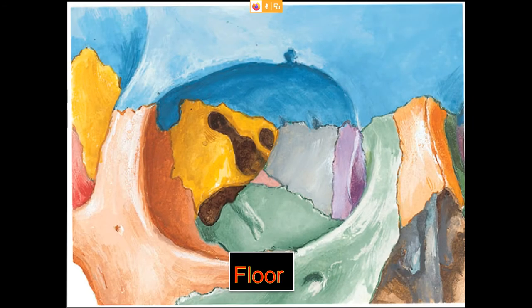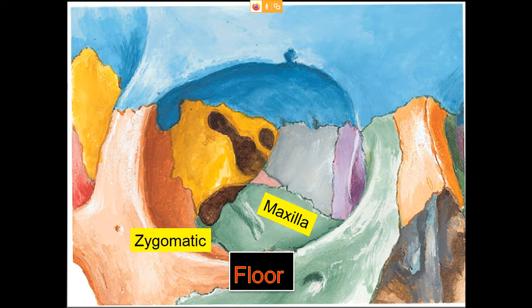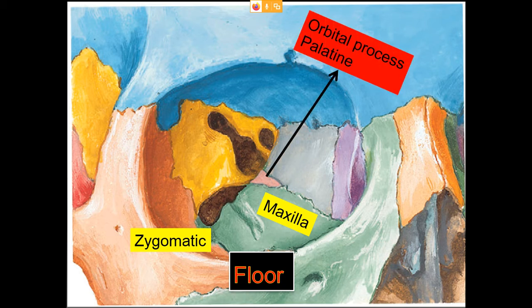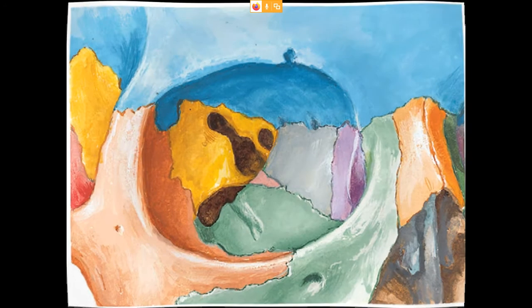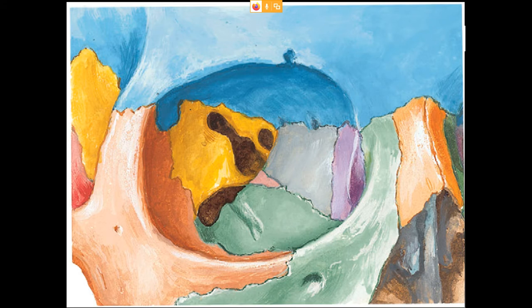Coming to the floor of the orbit: it is contributed medially by the orbital surface of the maxilla and laterally by the zygomatic bone — one-fourth by the zygomatic bone and three-fourths by the maxilla. Posteriorly, a small bony part called the orbital process of the palatine bone also contributes to the floor. On the orbital surface of the maxilla we can identify a groove called the infraorbital groove, which transmits the infraorbital vessels and nerves — branches of the maxillary artery.